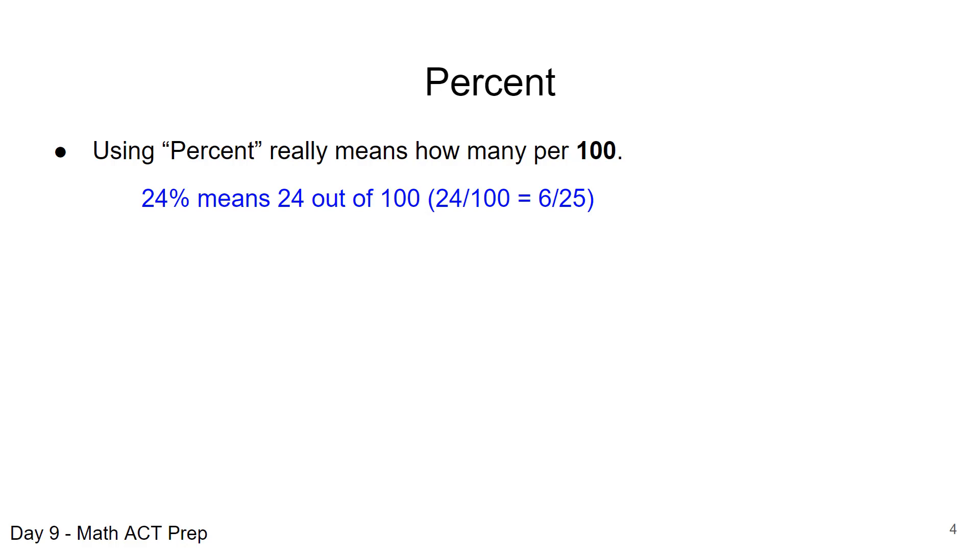So when you're talking about 24%, you can also think of that as 24 out of 100 or 24 one-hundredths as a fraction, and you can even reduce that down to 6 over 25.